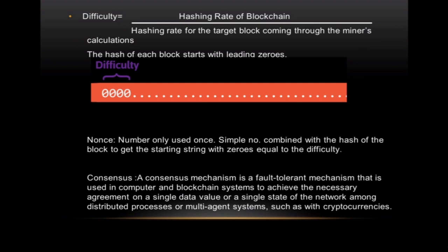Difficulty is the hashing rate of the blockchain divided by the hashing rate for the target block from the miners. In Bitcoin, the concept is that every block should be added in 10 minutes. If miners are adding blocks too easily before 10 minutes, the difficulty is increased. If miners take more than 10 minutes, the difficulty is decreased by the blockchain protocol itself.